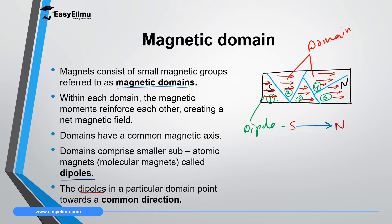Because all the dipoles face a common direction, the dipoles in the first domain reinforce with the second, third, fourth, and fifth domains. Since they are all facing in a common direction, they create a net magnetic field. Therefore this magnet has a north pole on the side where the arrows are facing and a south pole on the side where the tails are facing.